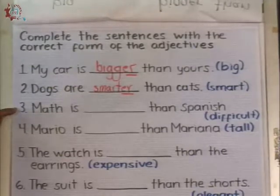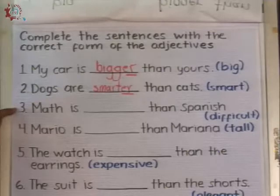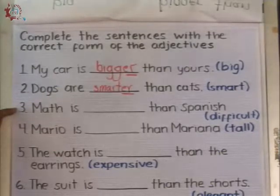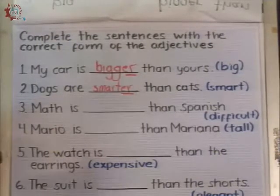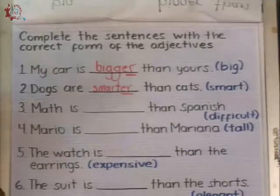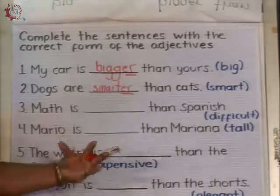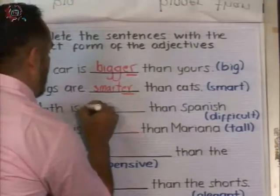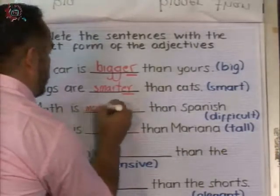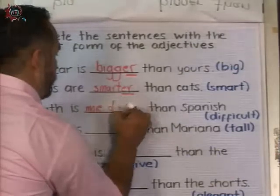Number three: Math is ___ than Spanish — adjective: difficult. Is this a short or long adjective? D-I-F-I-C-U-L — three sounds, right? It's a long adjective. So we need to write: more difficult than Spanish.